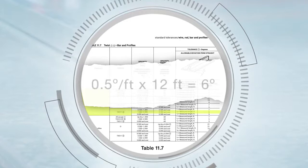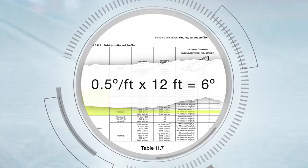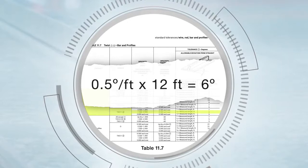If you multiply a half degree per foot by 12 feet, you will get six degrees. However, this is larger than the maximum for a total length, so the five degrees maximum will apply.